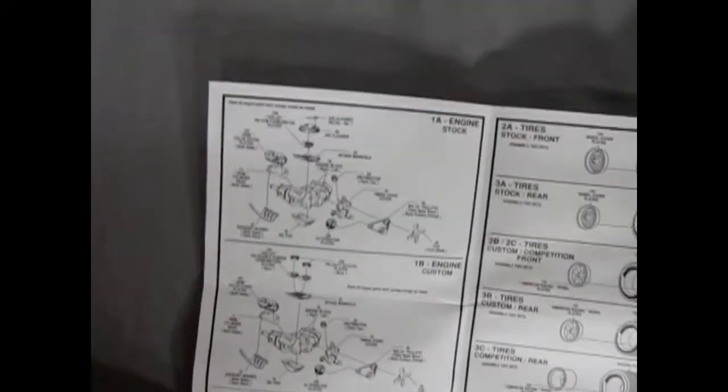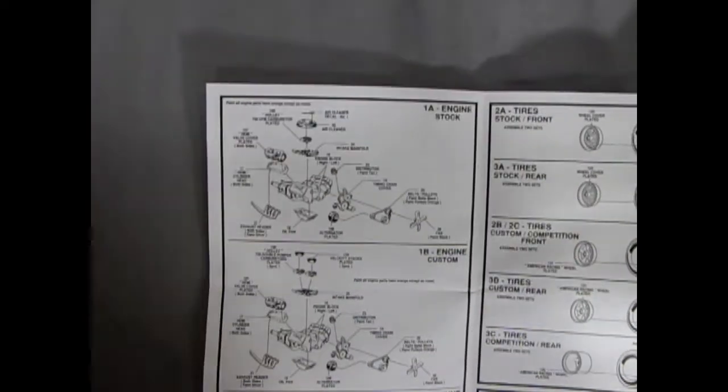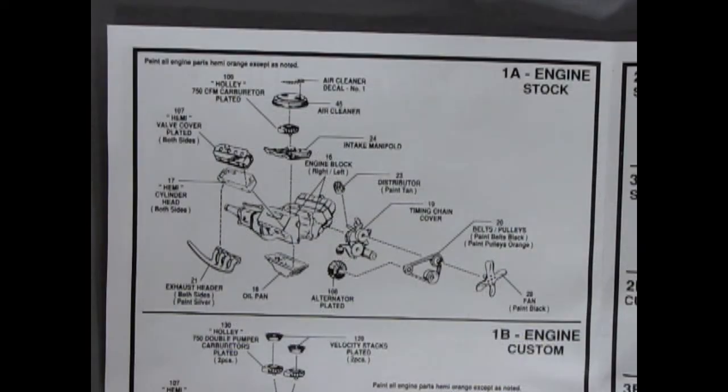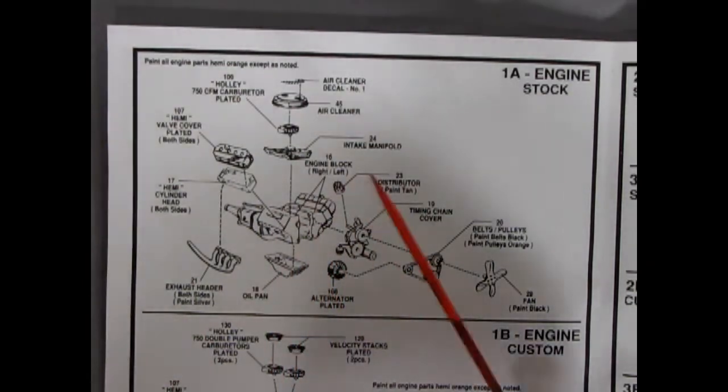There are only two engine choices for 1969 in the Dodge Daytona. One was the amazing 440 six-pack and the other was the 426 Hemi. AMT has included the 426 Hemi engine which you can build one of three ways.